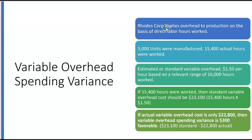Rhodes Corp applies overhead to production on the basis of direct labor hours worked. 5,000 units were manufactured for the period, and 15,400 actual hours were worked. We want to know the variable overhead spending variance. The estimated or standard variable overhead is $1.50 per hour based on a relevant range of 16,000 hours. So the standard variable overhead cost should be $1.50 per hour times 15,400 hours worked, equaling $23,100.